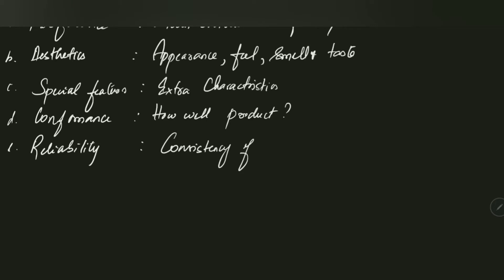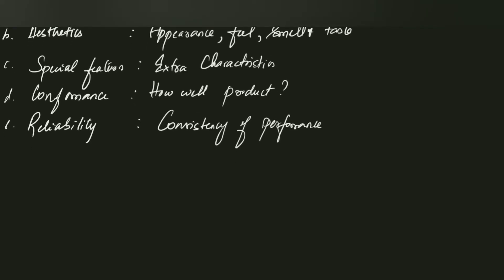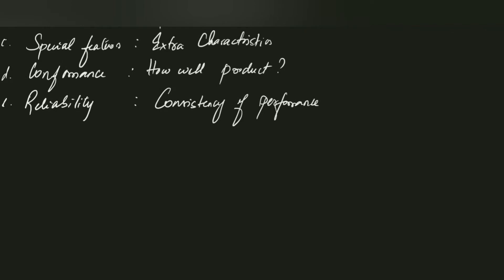The next attribute is reliability, which refers to the consistency of performance — how long the product continues to work well. When you buy a new product, you might ask your friends how long they've been using it, which reflects the reliability of the product.